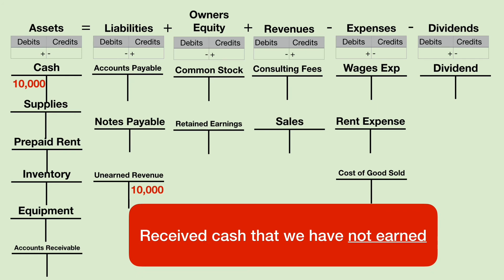This one is a little bit tricky — we should go a little slower. Whenever we receive cash before we earn it, we technically owe that money back. So we will debit cash because we possess it, and we will credit a liability because on our books we need to show that we owe it back. Later in the next chapter, I will show you how to transfer this money out of the liability account and over to the revenue account, but only after we earn the money.